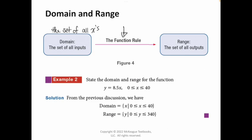The example says to state the domain and range for y equals 8.5x, where x falls between 0 and 40. When determining the domain, consider: are there any values of x that if I plug into my formula will cause a problem? Some restrictions to consider: you can't divide by 0 — for example, with the function 1 over x, plugging in 0 gives an undefined value. Second, we can't have negative numbers under an even root, meaning the square root, 4th root, or 6th root.